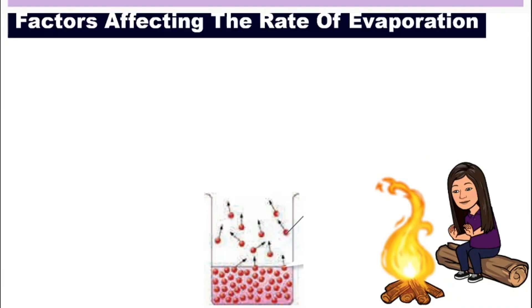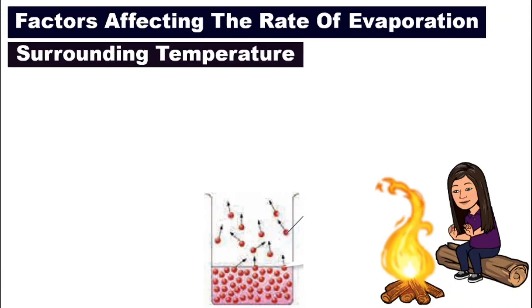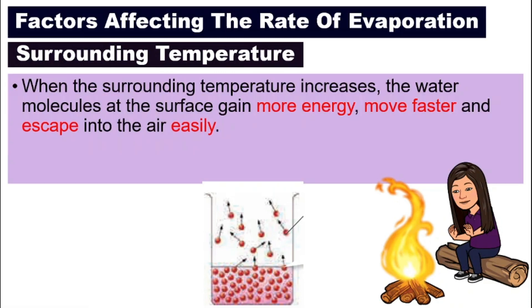Factor number two is the surrounding temperature. Let's say we go into a forest for camping and accidentally fall into a river. How would we try to dry ourselves up quicker? We would sit around a campfire, because the higher temperature will make the water on our body or clothes dry faster and evaporate faster. So when there is a higher temperature, it will result in a higher rate of evaporation.